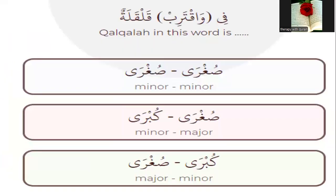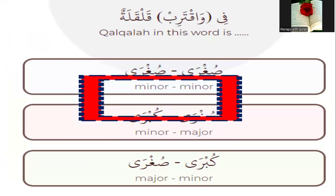Next question: the word has two qalqala letters — Taa in the middle and Qaaf at the end. So it has both minor and major qalqala.